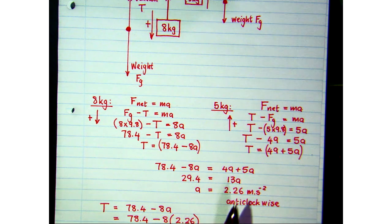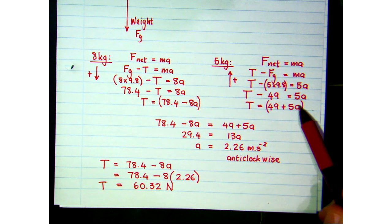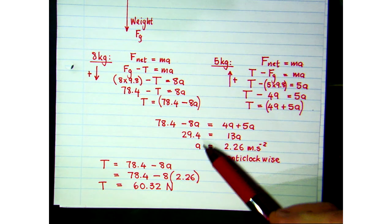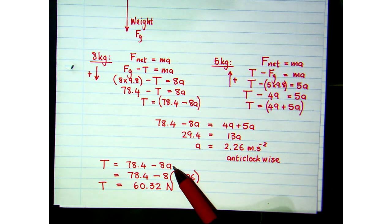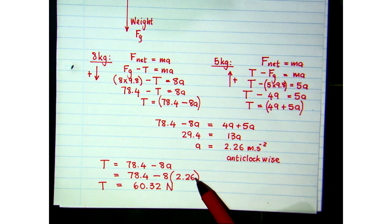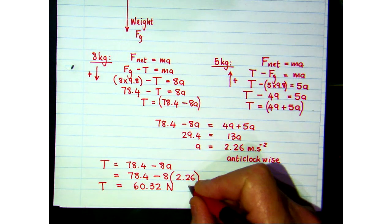To find T, we've done this several times now. We take our acceleration value, and we can put it into any one of those two expressions. So, I chose that one, put my acceleration in, and I found the tension force. So, the tension force would act upwards on both blocks.